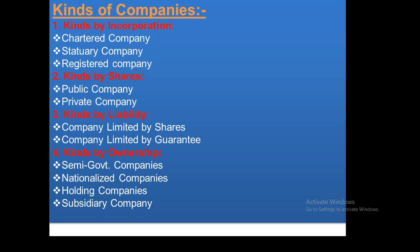Kinds by share: private companies. Kinds by liability: company limited by shares, and company limited by guarantee. Companies limited by shares have capital divided into shares, which are small units. Shareholders buy shares to participate in the company.